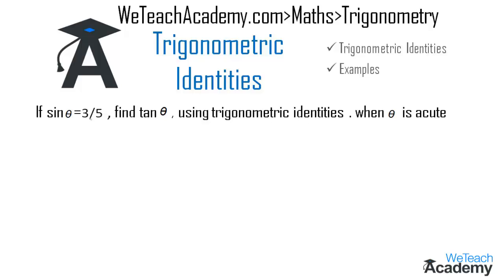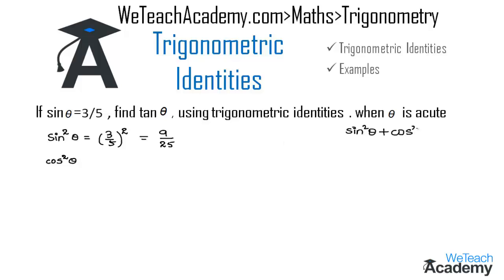We are given sine theta is equal to 3 by 5. Let us find the value of sine square theta. Sine square theta will be equal to 3 by 5 whole square, so that gives us 9 by 25. Using trigonometric identities we can find the value of cos square theta. Using the first trigonometric identity, sine square theta plus cos square theta is equal to 1, we can find cos square theta by transferring sine square theta to the right hand side, giving cos square theta equal to 1 minus sine square theta.